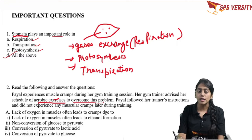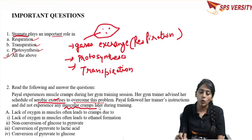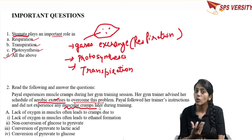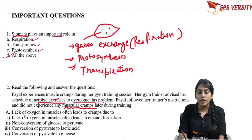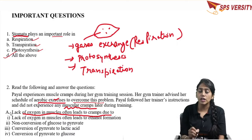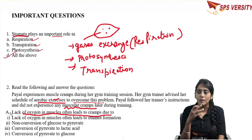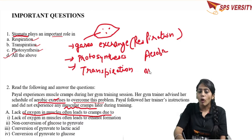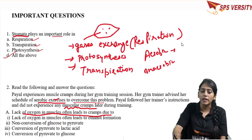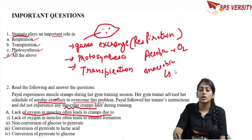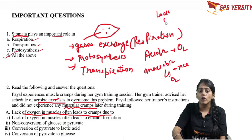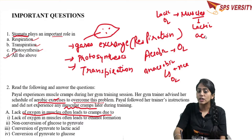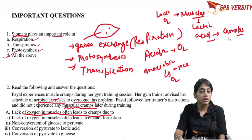The first question is: lack of oxygen in muscles often leads to cramps due to what? I have told you about aerobic respiration and anaerobic respiration. Mostly in animals, aerobic respiration occurs for which oxygen is important. But if there is a lack of O2, another type of respiration occurs in muscles which forms lactic acid, and this lactic acid produces cramps.